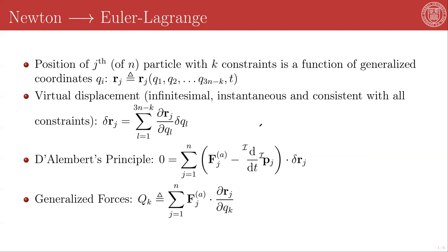Recall our basic setup: a system of n particles with k constraints has 3n minus k degrees of freedom, and thus can be fully described by 3n minus k independent variables, which we call the generalized coordinates, q1 through q_{3n-k}.